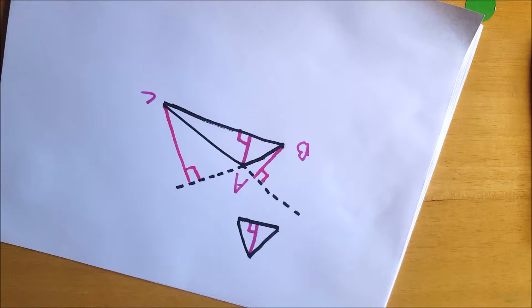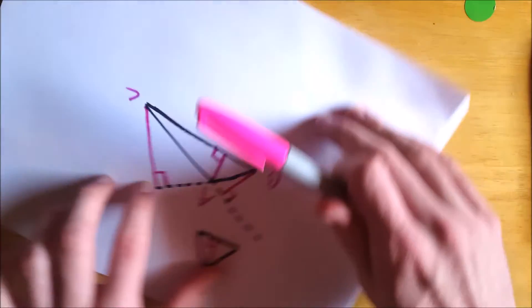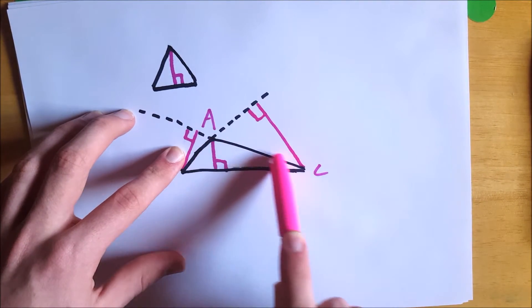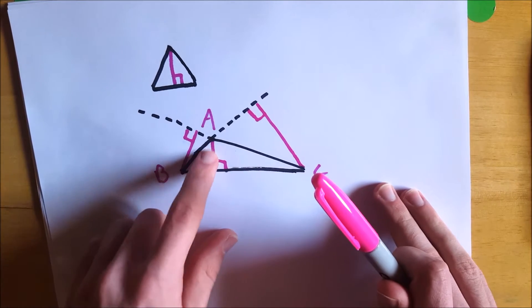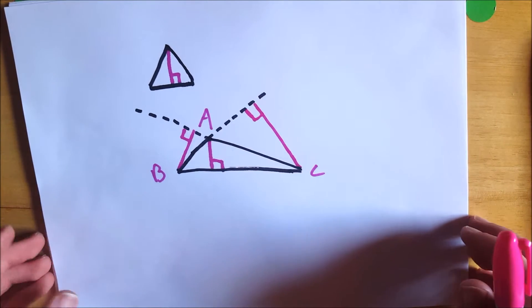So depending on what altitude you use, you have to pick the corresponding base if you want to find the area of a triangle. So if this is your height, then this is your base. If this is your height, then this is your base. And if this is your height, then this is your base. So keep that stuff in mind.